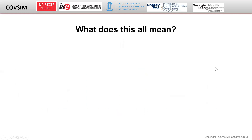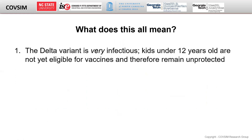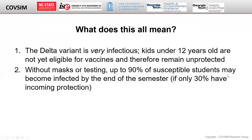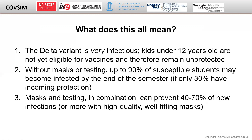So what to make of all this? Even with conservative estimates for the Delta variant's reproductive rate and a minimal number of infections coming from outside the school, our model estimates a significant number of within-school infections in the absence of masking and testing — upwards of 90% of susceptible students becoming infected by the end of the semester in a setting with just 30% incoming protection. The good news is that the combination of masking and testing can prevent as much as 70% of these potential infections.